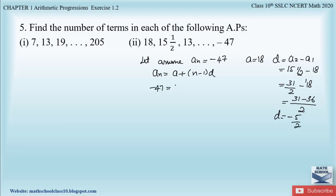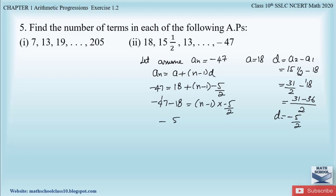Substituting into the formula: −47 = 18 + (n − 1) × (−5/2). Transferring 18 to the left-hand side: −47 − 18 = (n − 1) × (−5/2). That gives −65 = (n − 1) × (−5/2).